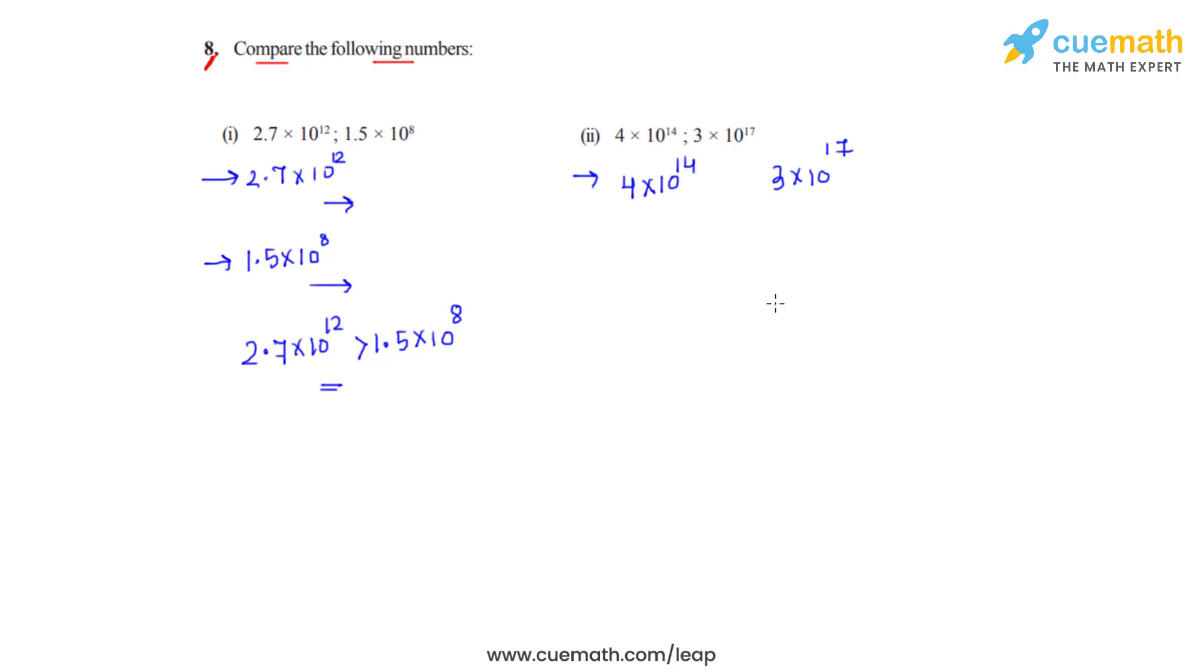The one with a higher or greater power of base 10 is 3 times 10 raised to 17. So clearly 3 times 10 raised to 17 will be greater than 4 times 10 raised to 14, and this is how we can compare numbers which are expressed in standard form.